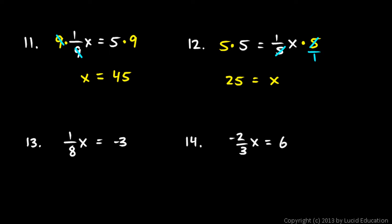Number 13: 1 eighth times x equals negative 3. I'll multiply by 8 on both sides. On the left, the 8s cancel out, leaving me with x equals negative 3 times 8, which is negative 24.